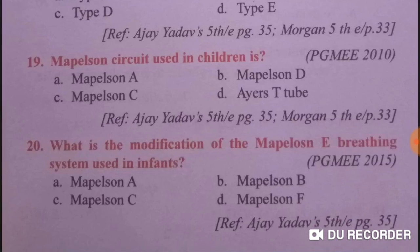The Mapleson circuit used in children is Ayre's T-tube — option D is right. What is the modification of the Mapleson E breathing system used in infants? That is Mapleson F — option D is right.